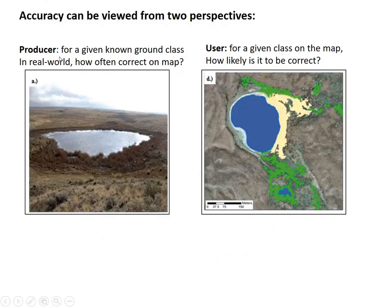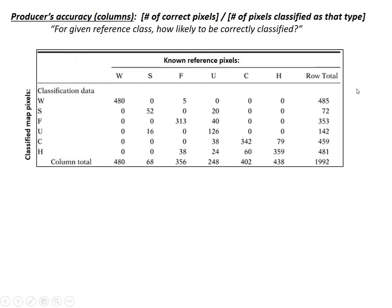This leads to two types of accuracy. Producer's accuracy is thinking about it in terms of the producer of the map — for a known type of ground class, how often does that come out correct on the map? User's accuracy is imagining you're just the person with the map and you don't know anything about what's on the ground — for a given class on the map, how likely is a pixel in that class to be correct? These are tricky concepts, but we can compute both of them from our confusion matrix.